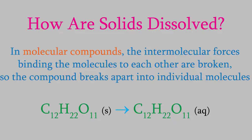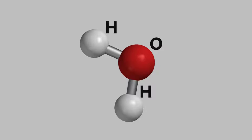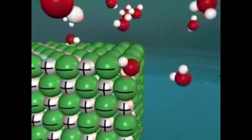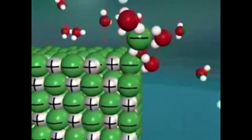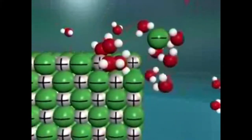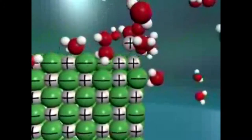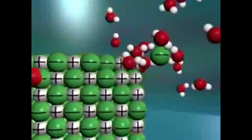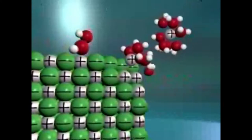So how does the solvent break these ionic bonds and intermolecular forces? The secret is to remember the structure of water molecules. As we discussed in several earlier videos, water is a very polar molecule, which means one side has a slight positive charge and the other side has a slight negative charge. That means the positive side will be attracted to the negative ions in an ionic solid, and the negative side of the water molecules will be attracted to the positive ions. The water molecules pull these ions away from the solid, and that makes the solid slowly dissolve.